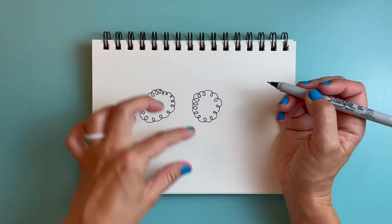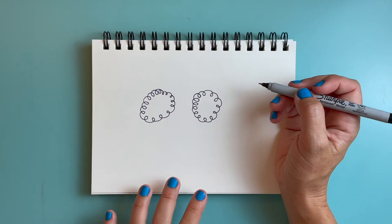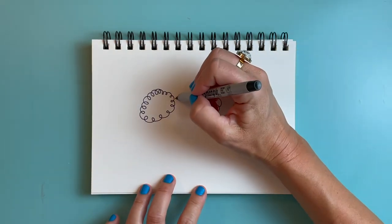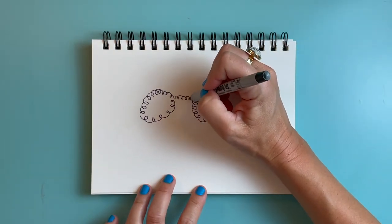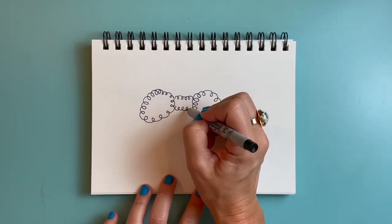Next I'm going to draw some of the body connecting these two poof balls here. So I'm going to draw a curly line coming this way and a curly line right underneath it.